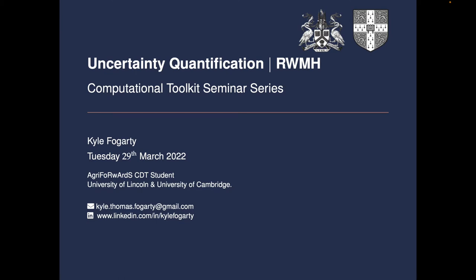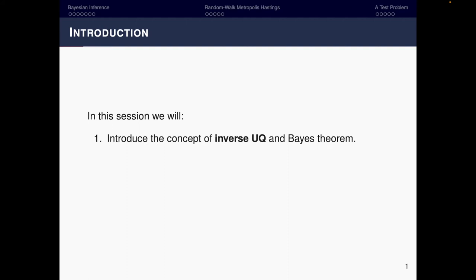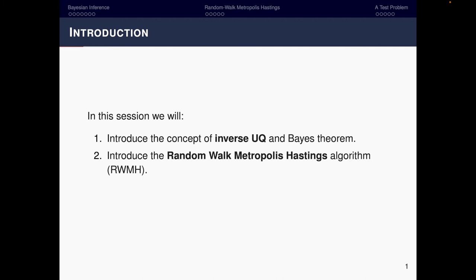Hi everybody, my name is Kyle Fogarty. I'm part of the AgriForward CDT and today I'm going to be talking about uncertainty quantification, and in particular the random walk Metropolis-Hastings algorithm. In this short session we're going to cover an introduction to inverse UQ and Bayes theorem, then introduce random walk Metropolis-Hastings, and finish with an example of how we can implement that in Python.